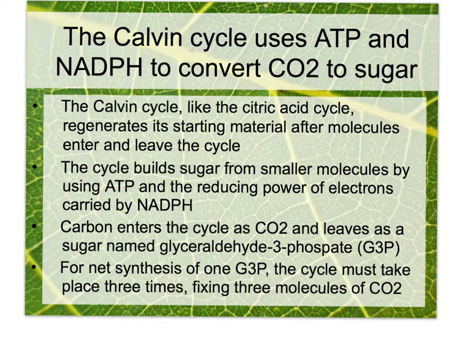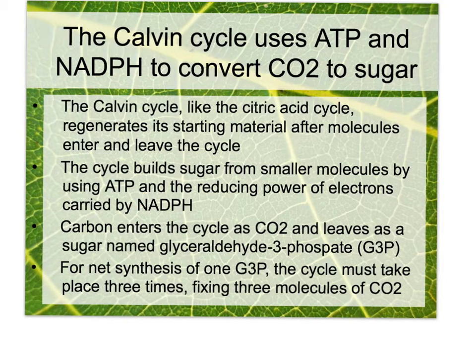It's going to be like the citric acid cycle that we're going to learn in the next chapter. Because it's a cycle, whatever it starts with, it's going to need to end with and regenerate before the process is over. What actually ends up happening during the Calvin cycle is that we will be building sugar molecules, using ATP and the power of electrons from the NADPH. Both of these came from those two photosystems.